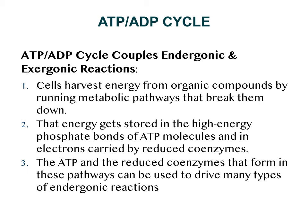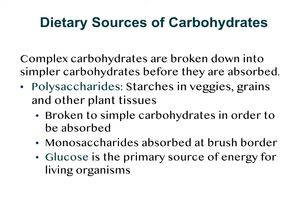We will soon see in glycolysis that ATP is required for the phosphorylation of glucose, creating a high-energy but unstable intermediate that also traps glucose inside the cell. But let's first examine some of the dietary sources of carbohydrates. Carbohydrates are biomolecules consisting of carbon, hydrogen, and oxygen atoms, usually with a hydrogen-to-oxygen atom ratio of 2 to 1, just like water. Carbohydrates are found in most of the foods we eat. Complex carbohydrates — polysaccharides such as starches in vegetables, grains, and other plant tissues — are broken down into simpler carbohydrates before they are absorbed at the brush border.